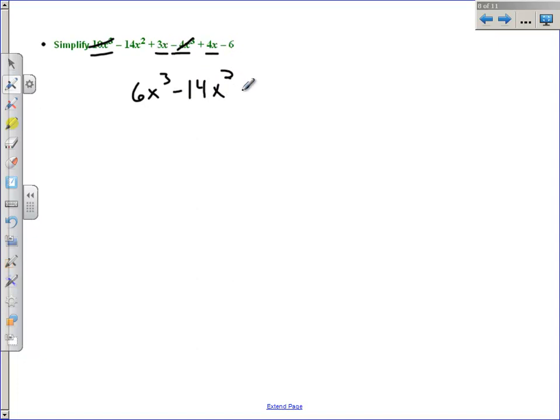And I've got 3x and 4x adds together to be +7x. And then, of course, -6 will be my constant term at the end. What's the degree of this polynomial? What's the degree? It's a third degree polynomial. And the leading coefficient is a 6.